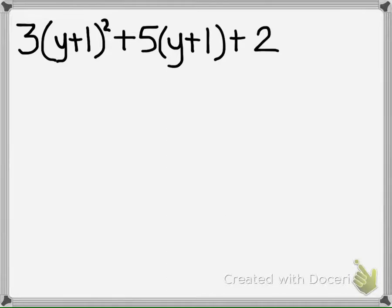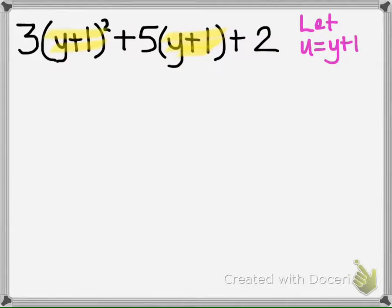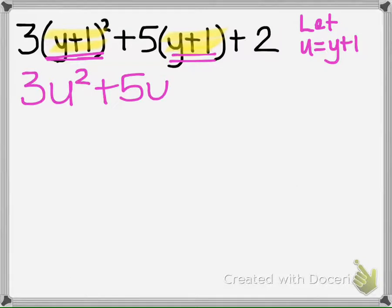So if we take a look at this problem, we could simplify that all out and then factor. Or we can take the y plus 1's out and let u represent that, so that way we don't have to worry about simplifying all of this. So instead we would have 3 and take this out and put a u in its place. Take this out and put a u there in its place. And now we factor this problem, which looks a lot nicer.